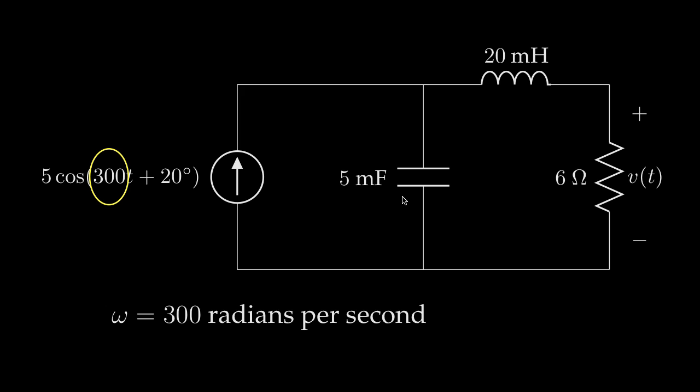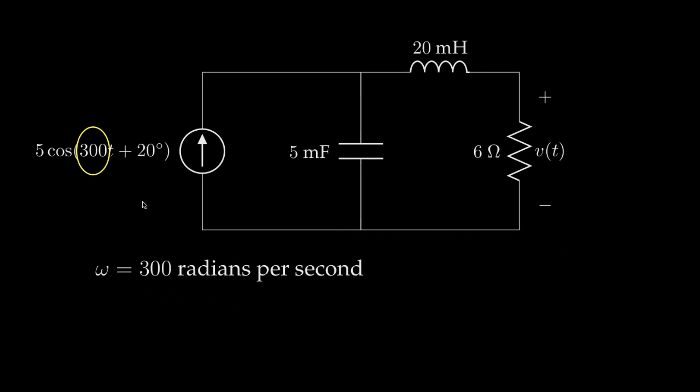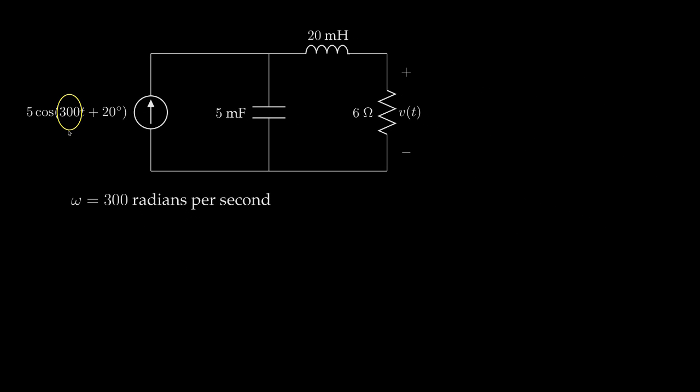Before doing that, we'll first associate a phasor current with this current source. The phasor current has an amplitude of 5 and a phase of 20 degrees, so we'll write that as a phasor whose amplitude is 5 and whose phase is 20 degrees.